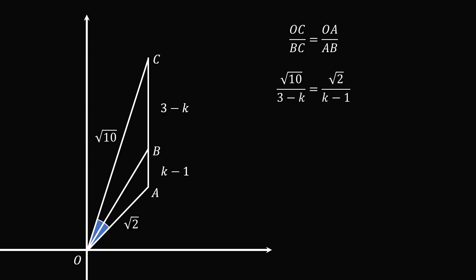Now we just have to simplify this equation and solve for k. We will cross multiply, then we'll divide both sides by the square root of 2, and then we will group like terms. From here, we will divide both sides by the square root of 5 plus 1.